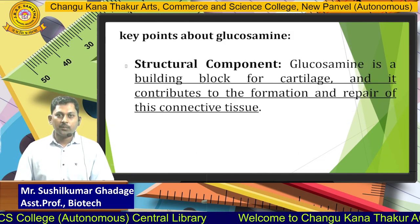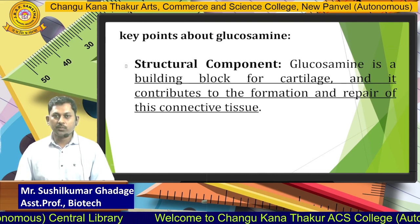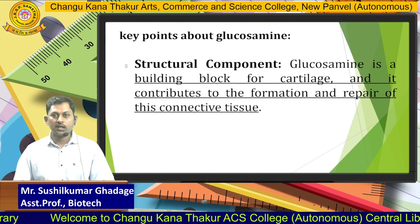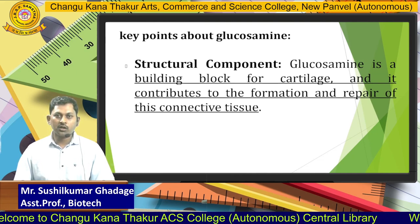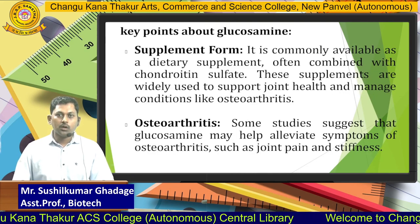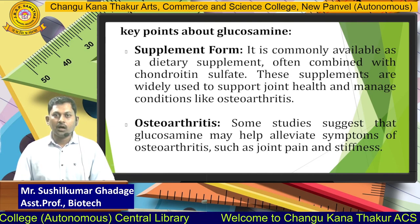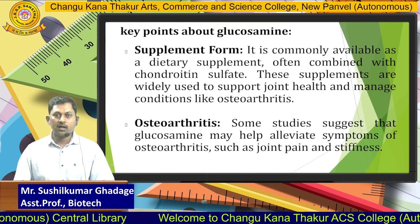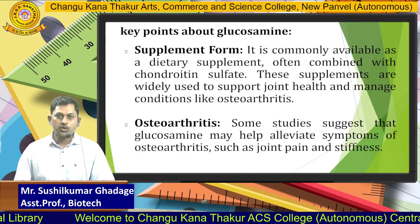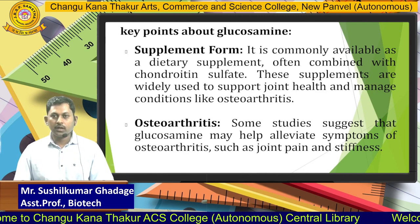Glucosamine is a building block for cartilage and contributes to the formation and repair of connective tissues. It is commonly available as a dietary supplement, often combined with chondroitin sulfate. These supplements are widely used to support joint health and manage conditions like osteoarthritis.